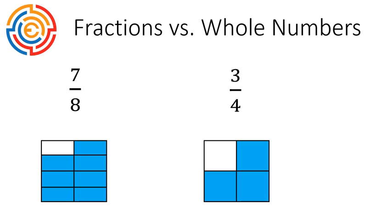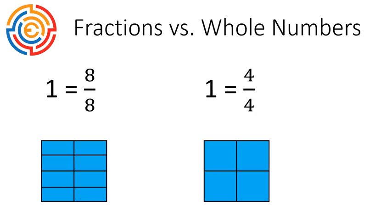With a whole number, all the pieces are included. So a whole number would be one, or eight out of eight, four out of four. When the numerator and the denominator are the same, that equals one whole number.